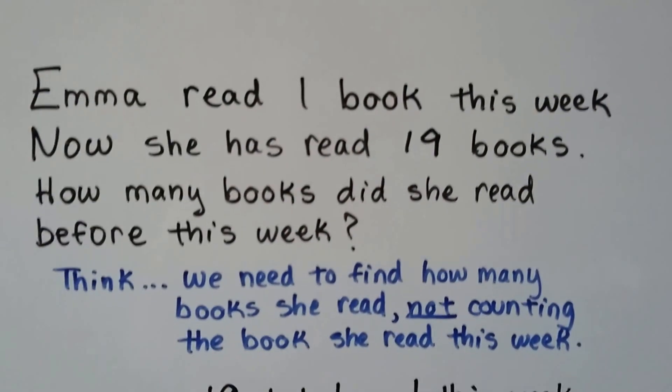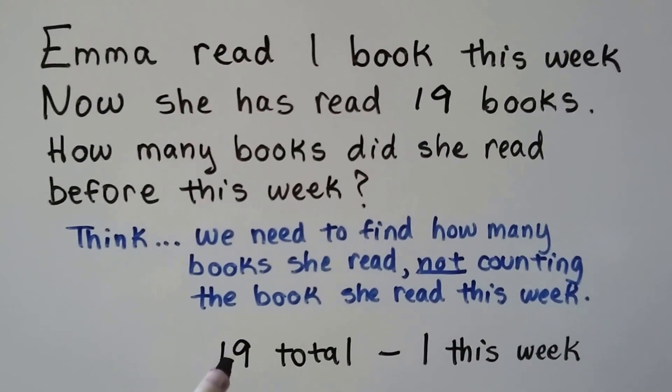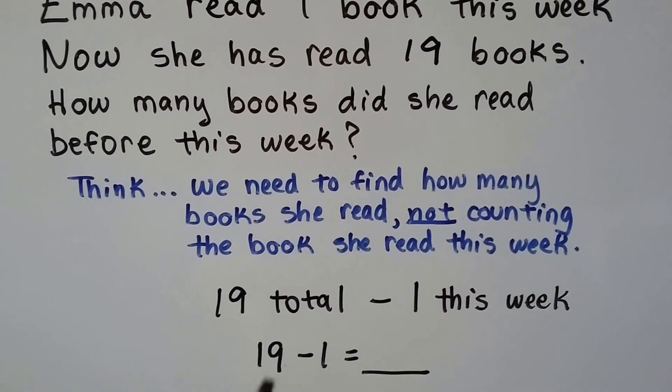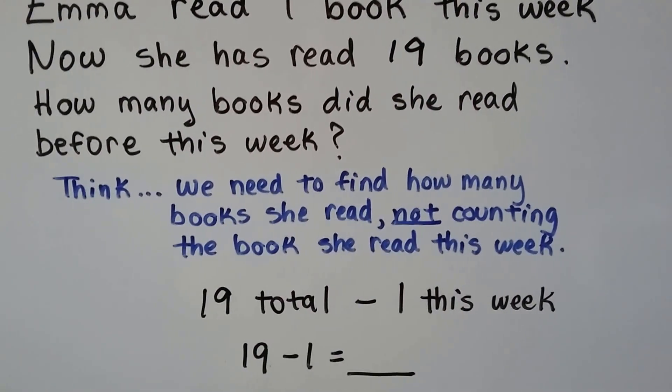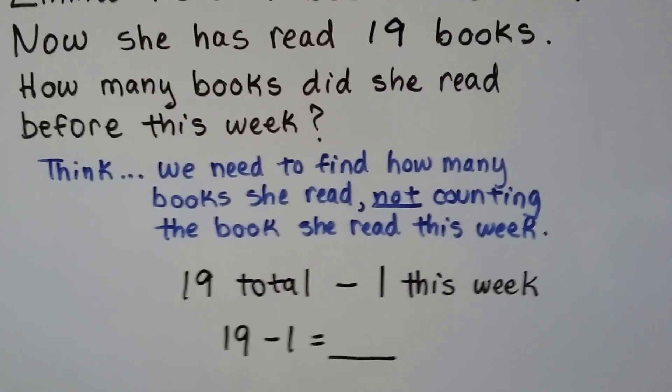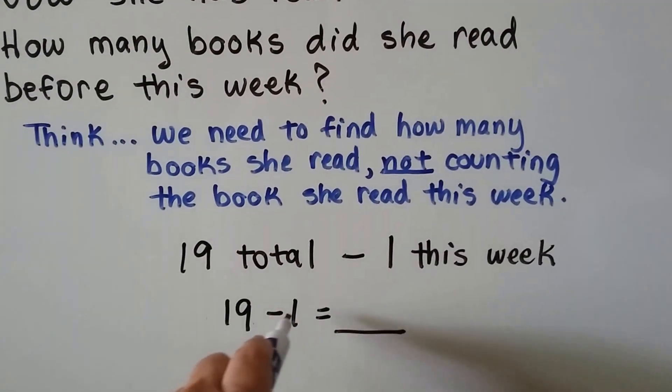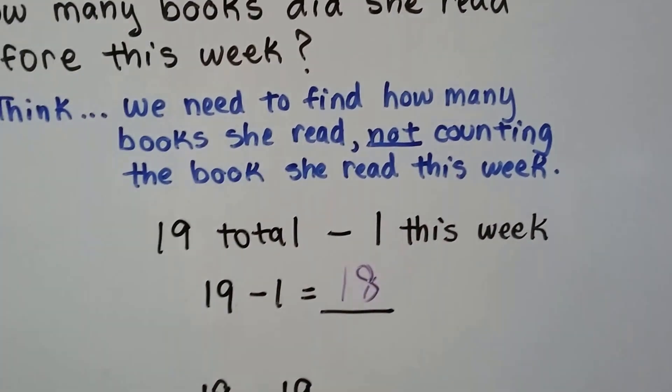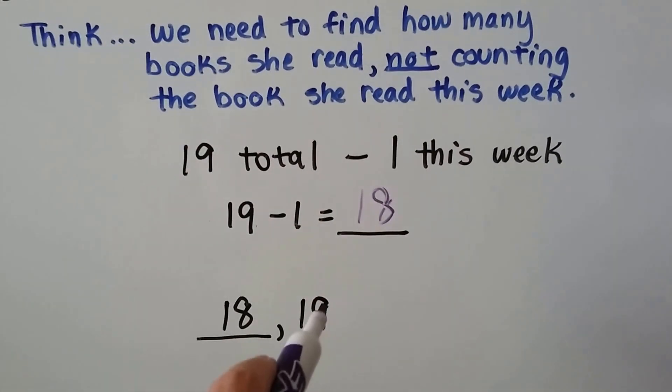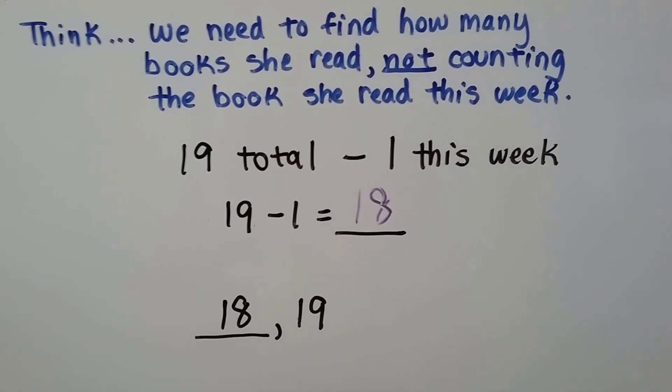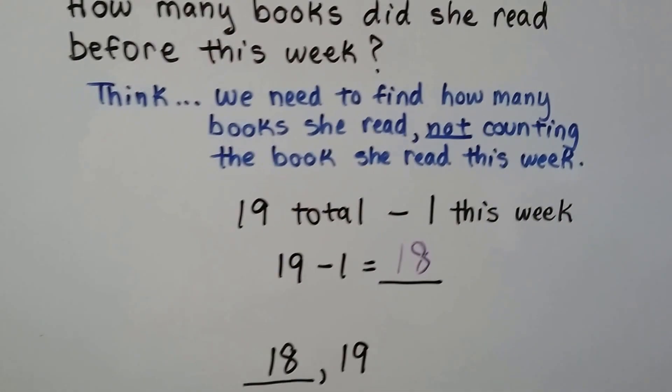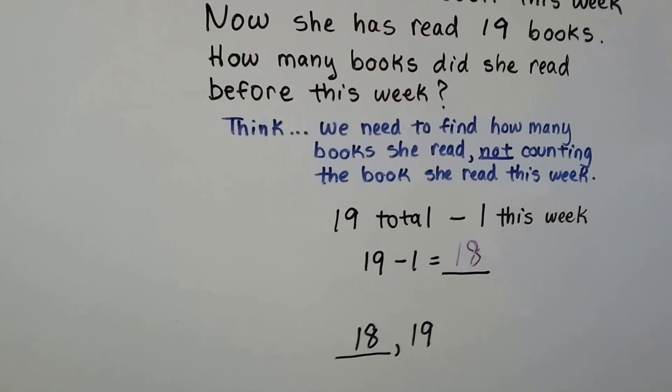If we took this one away, 19 total minus the one she read this week, that would be 19 minus 1. Do you know what 19 minus 1 is? If we take one away from 19, we'd have 18. And the number that comes before 19 is 18. She read 18 books. She read one book this week, and now she's read 19 books.